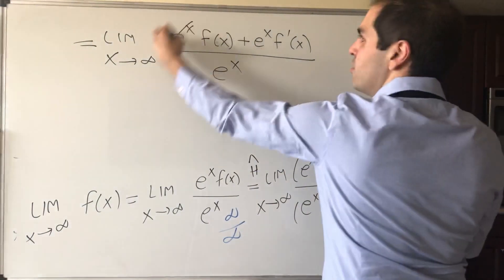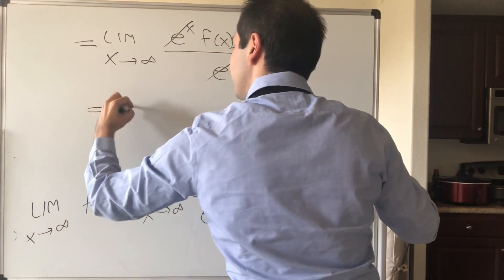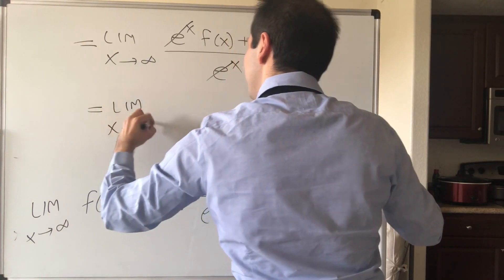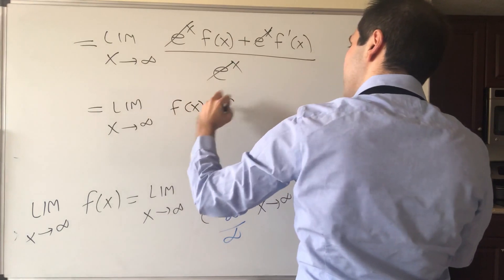But now if you factor out e to the x, this cancels out, and you get that this is the limit as x goes to infinity of f of x plus f prime of x.